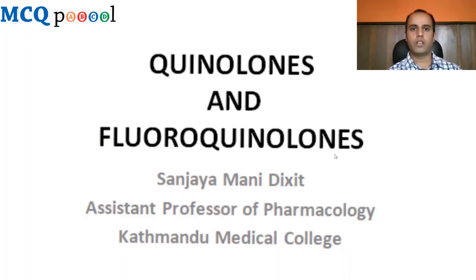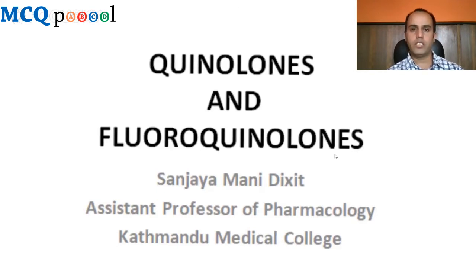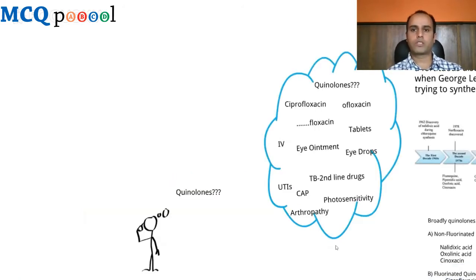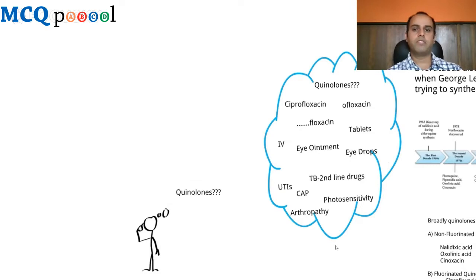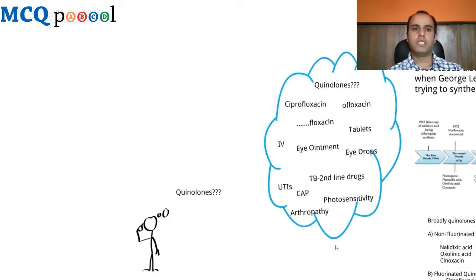Hello everyone, welcome to my lecture on quinolones and fluoroquinolones. Today we'll be talking about quinolones and fluoroquinolones briefly, and in our next lecture we'll talk about individual drugs. When we say fluoroquinolones, what comes to mind? It's either quinolones, ciprofloxacin, ofloxacin, or various other floxacins — tablets, IV drugs, eye ointments, eye drops — and conditions like UTIs, community-acquired pneumonia, TB second-line drug therapy, photosensitivity, or arthropathy.